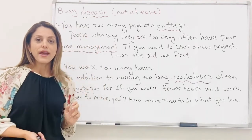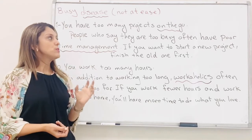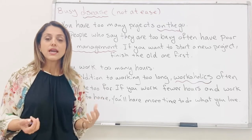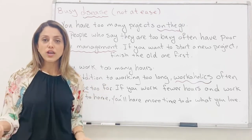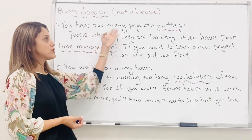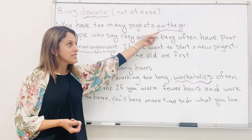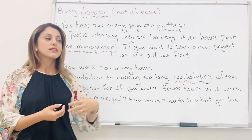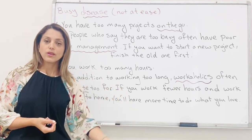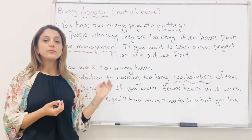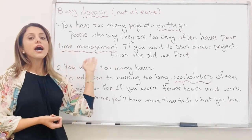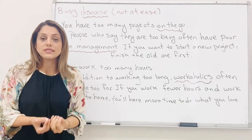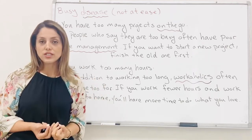Number one: you have too many projects on the go. Whenever you're too busy, maybe it's because you have too many projects that you have to work on. 'On the go' means in progress — it means something you are working on right now. People who say they are too busy often have poor time management. Time management means using your time efficiently.